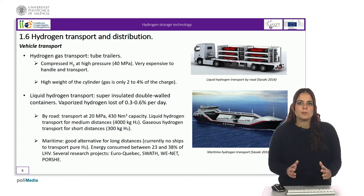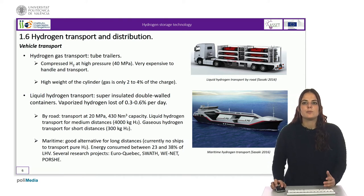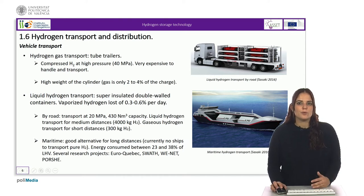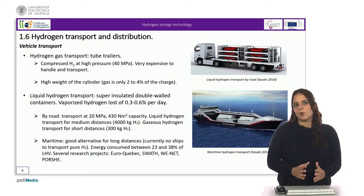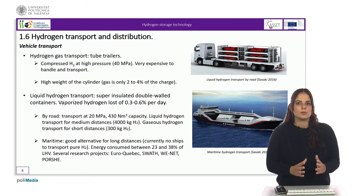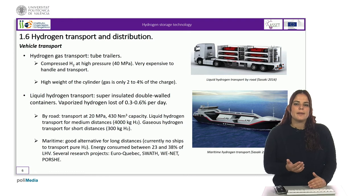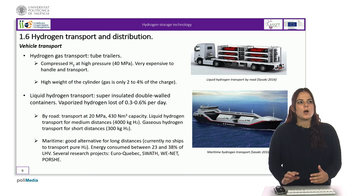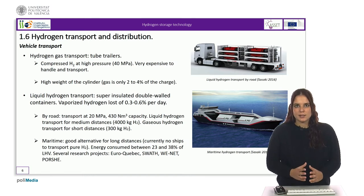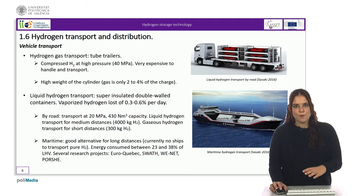Another option to transport hydrogen is with a vehicle. The transport of gaseous hydrogen in pressurized containers is an option for road transport of moderate quantities over moderate distances. For distances of more than 300 kilometers, the transport of liquid hydrogen is usually chosen, since the high cost of the liquefaction process is compensated by a higher energy density. For larger quantities, it is quite common to transfer hydrogen in cryogenic tanks by rail or ship and then vaporize it at the actual point of consumption.